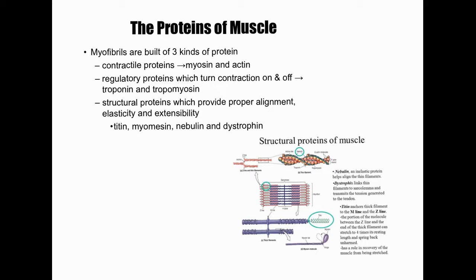Now, some proteins that make up the structure of muscles and specifically the sarcomeres. The first two are myosin and actin — the contractile proteins — those are the thick and thin filaments. The thin filaments shown in red are actin, and the thick filaments in the middle of the sarcomere shown in blue are the myosin.